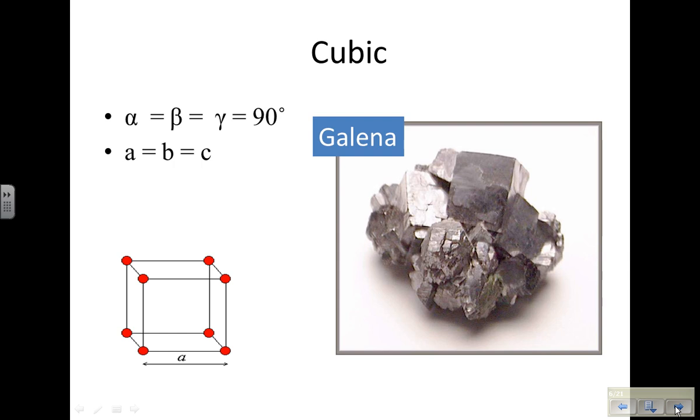The first crystal system is the cubic system. I have a sample of Galena pictured. Notice the nice cubes that it expresses. All sides are equal, and all angles are 90 degrees.